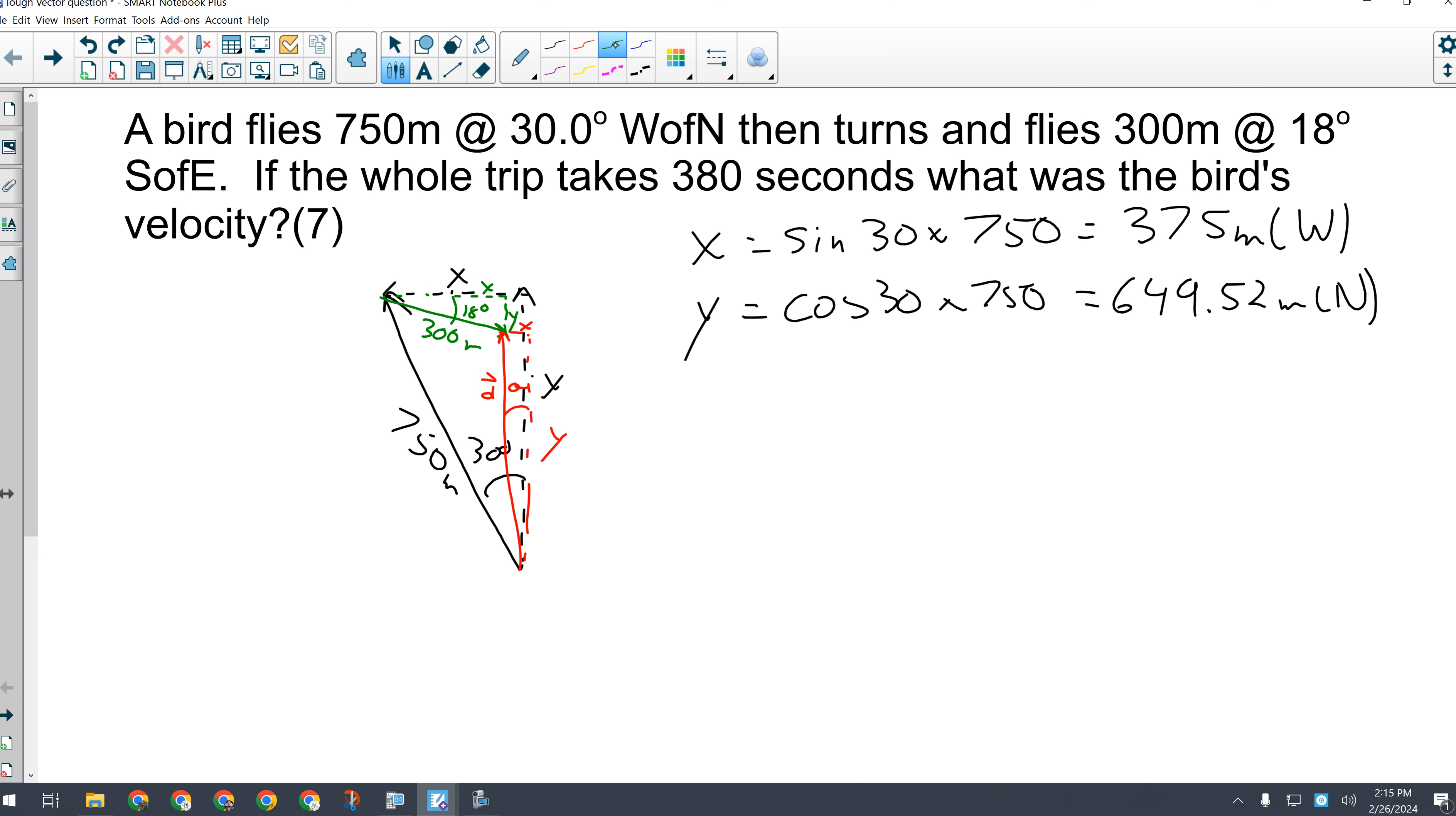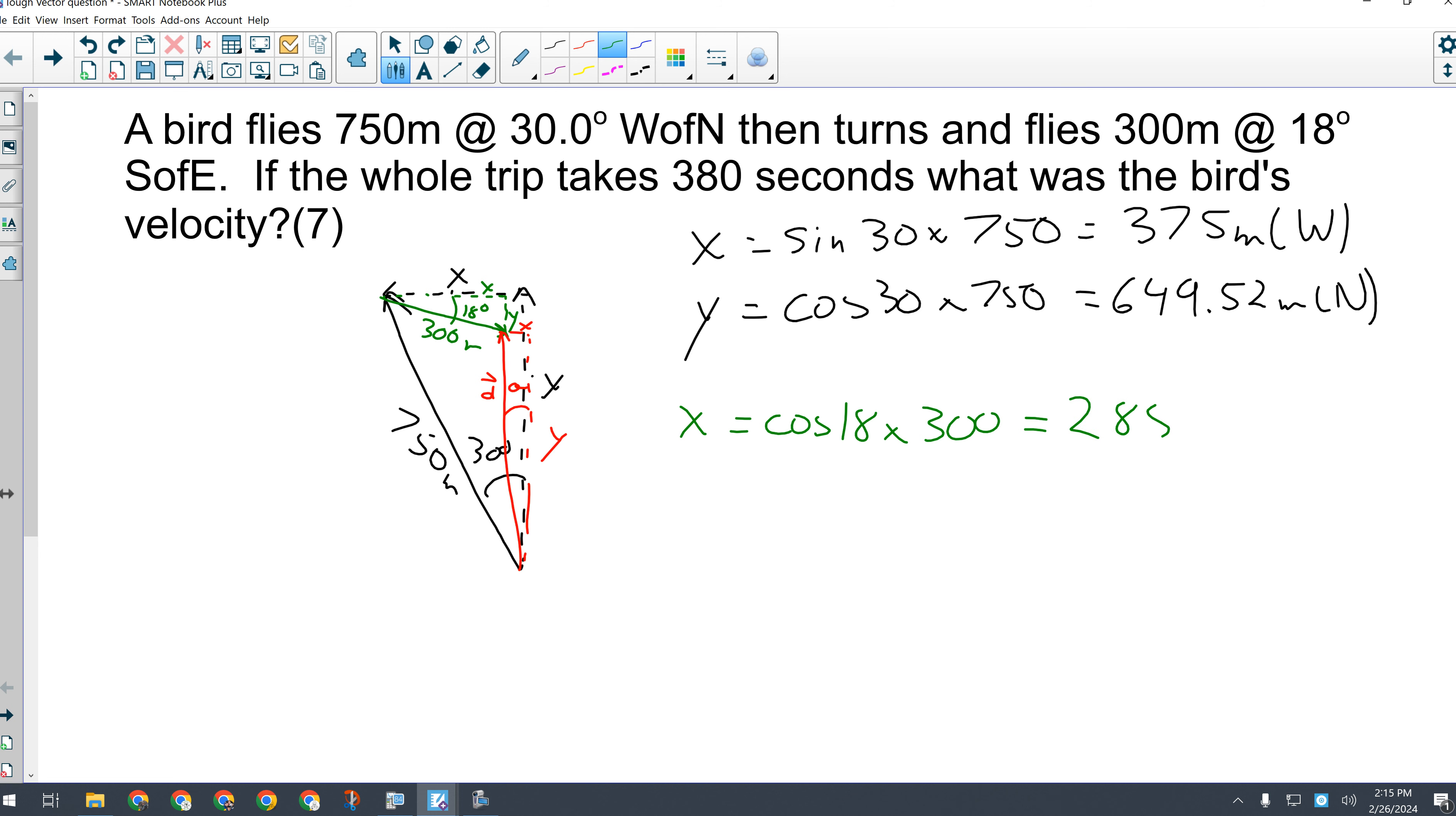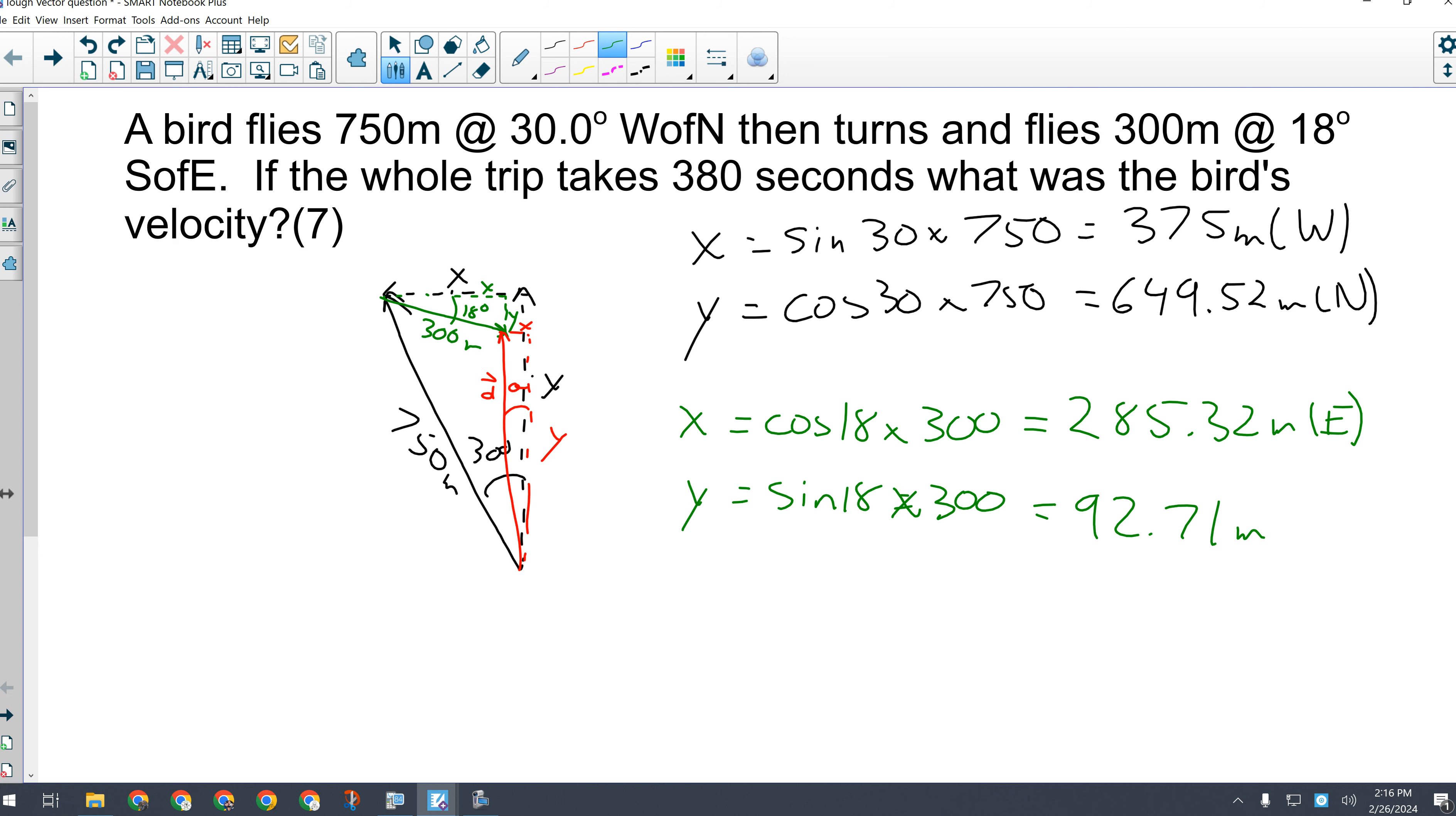Then we've got to do the second triangle. X is the adjacent side on that triangle, so that'll be the cos of 18 degrees times 300 meters. So 285.32 meters east. And there, again, I could tell I probably even should have made that even smaller. I probably made this green triangle a little bigger than it should have been. And then y is the opposite side, so we'll have the sine of 18 times 300. So that side is going to be 92.71 meters south.